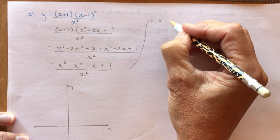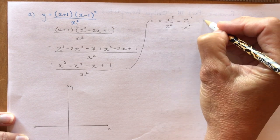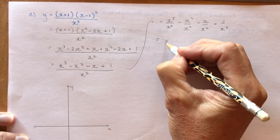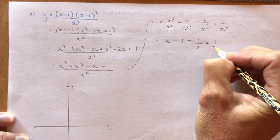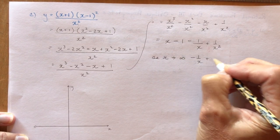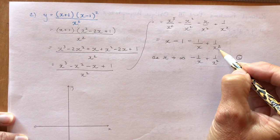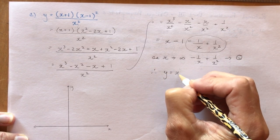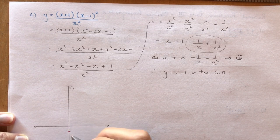Now divide each term by x²: x³/x² = x, x²/x² = 1, giving x - 1 - 1/x + 1/x². As x approaches infinity, -1/x + 1/x² approaches zero because we're dividing by something very large. So y = x - 1 is the oblique asymptote. It's important to do your division properly.